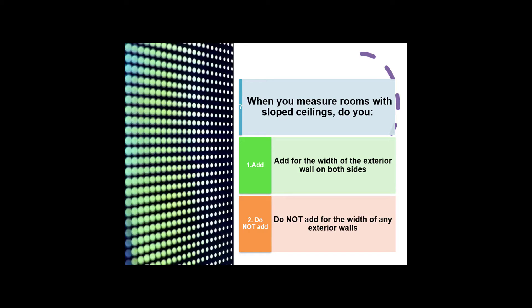Here's the question. When you measure rooms with slope ceilings, do you number one, add for the width of the exterior wall on both sides, or number two, do not add for the width of any exterior walls? We've been trying to get this answered for at least the last seven years. About half the country does it one way and half the country does it the other. We are the real estate experts, and we need ANSI to give us a definitive way to measure these rooms — and in the ANSI 2020 update, we finally got it.